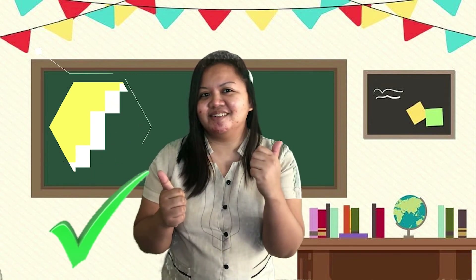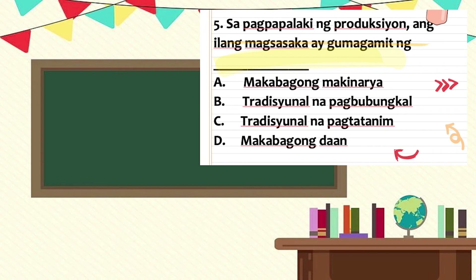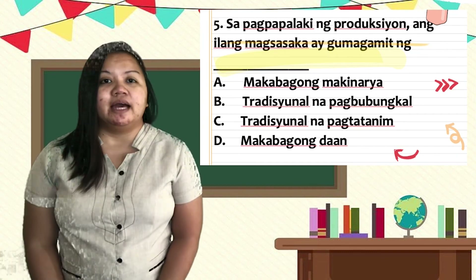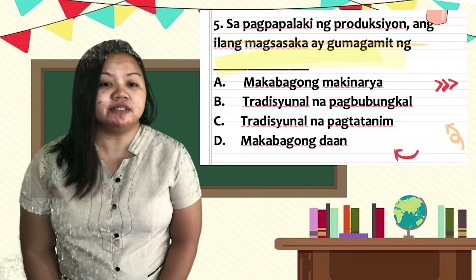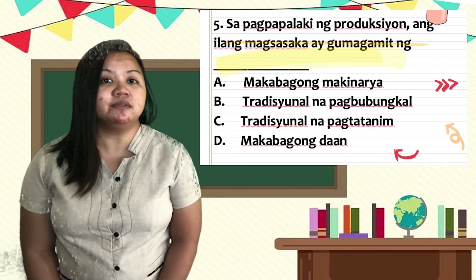Letter B, tradisyonal na pagbubungkal. Letter C, tradisyonal na pagtataning. O letter D, makabagong daan. Kung ang sagot mo ay letter A — mahusay ka, nakuha mo! Para naman sa ating kasunduan, sagutin ang gawain sa pagkatuto bilang tatlo na nasa inyong module.